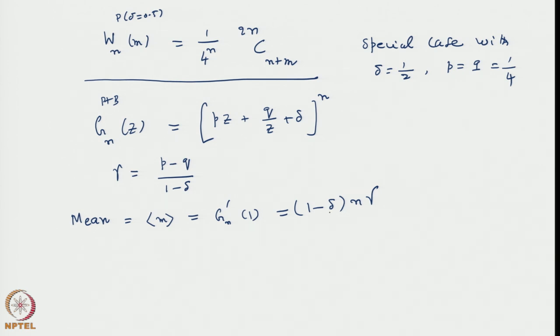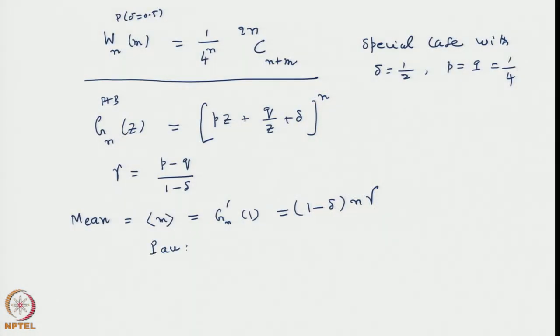When δ = 0 the mean reduces to the biased random walk case where the mean is n·γ — it shifts continuously toward the right if γ is positive, proportional to n. However, the presence of pausing (δ ≠ 0) retards this motion, because a certain amount of time is wasted in pausing. So pausing retards the drift, which is proportional to n.